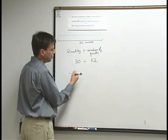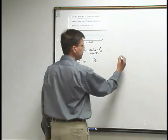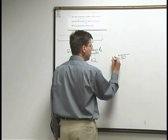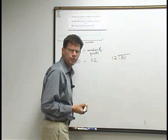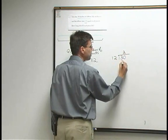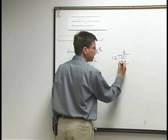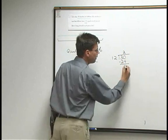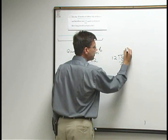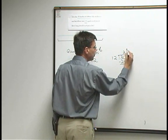30 divided by 12. Let's do the division. 12 goes into 30 two times. 2 times 12 is 24. When I subtract, 30 minus 24 is 6. So I write 6 over 12. I have 2 and 6/12 inches as the length of each piece.